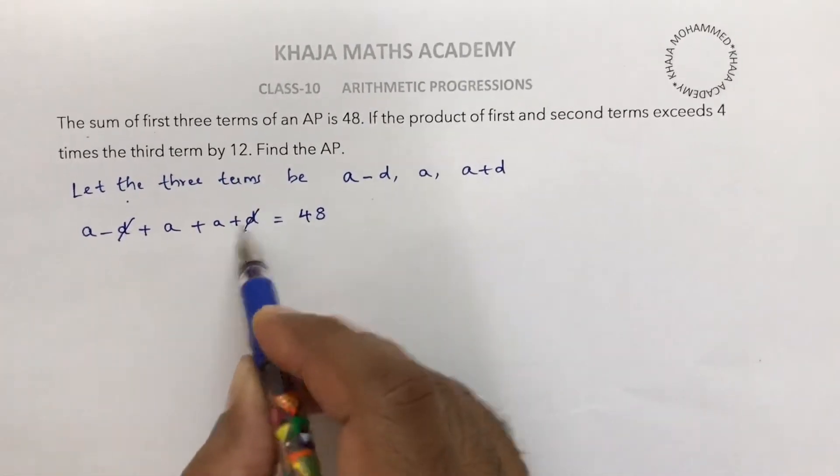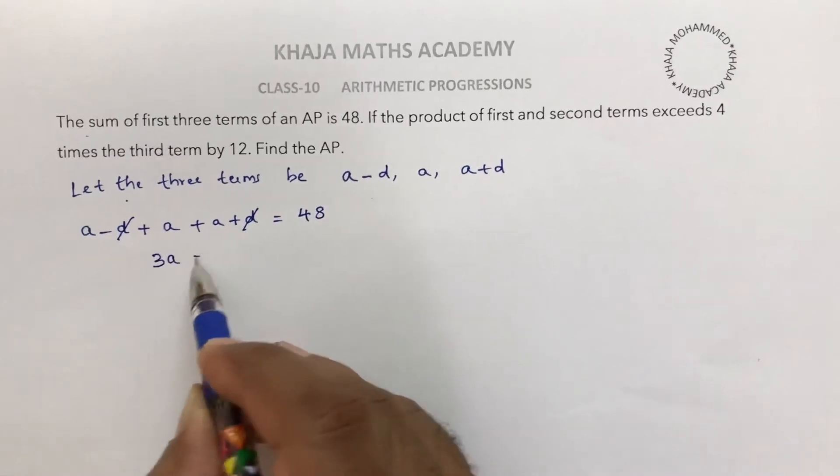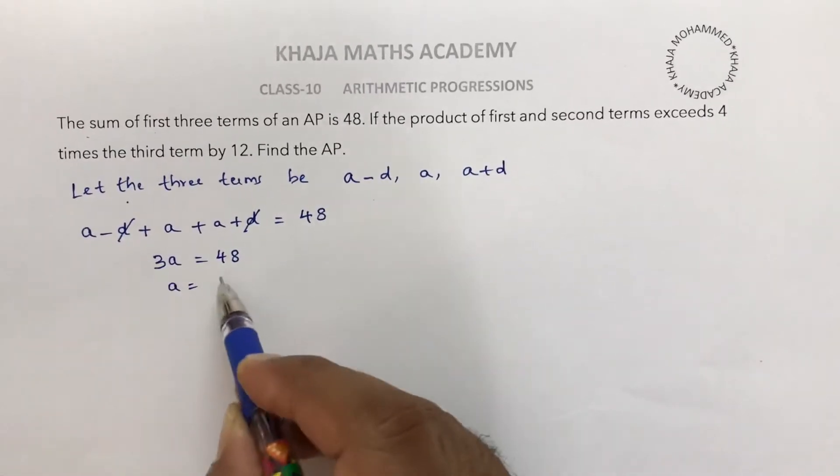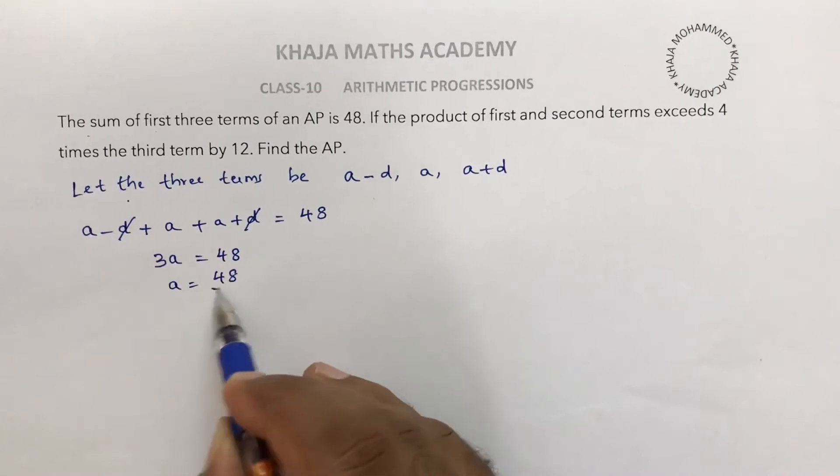So d and -d cancel, so 3a equals 48. Therefore a equals 48 by 3, so a is 16.